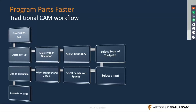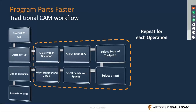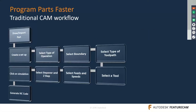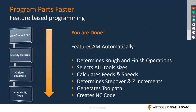When using FeatureCAM, you can remove all of those repetitive operations. In FeatureCAM, you simply import the part, identify features, simulate, and the NC code is automatically generated — making your programming significantly faster.